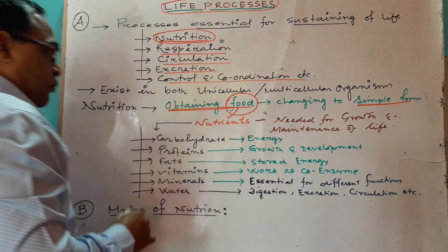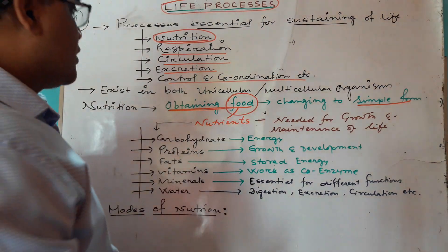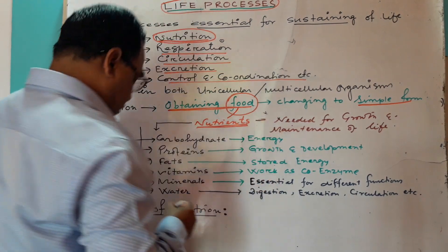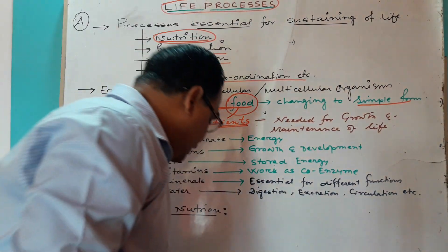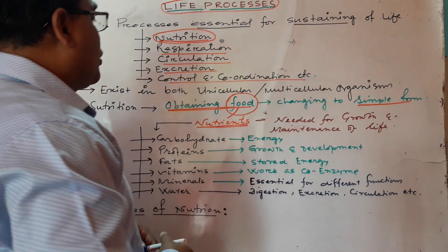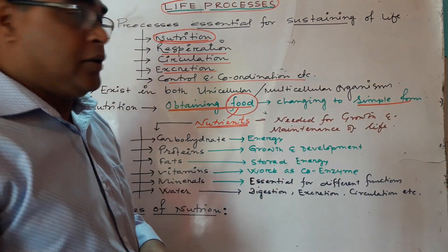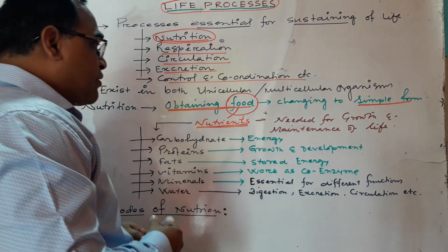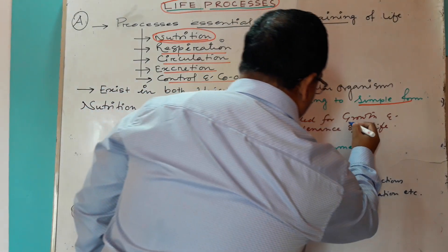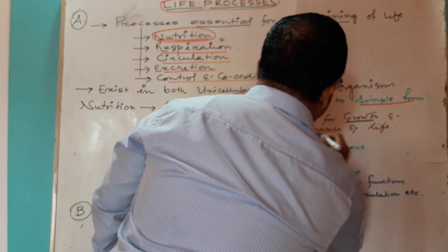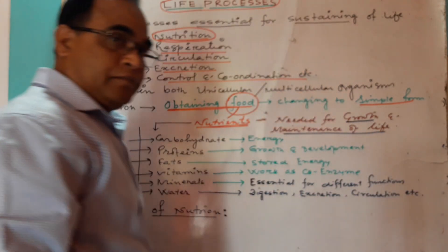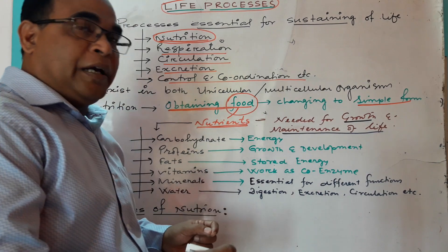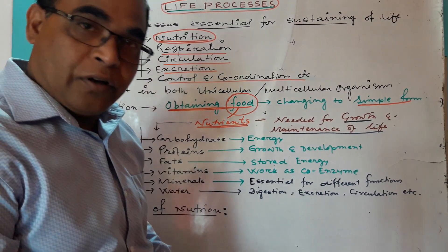So what is food, basically? The food contains nutrients. Different types of nutrients are there in food. What is the importance of nutrients? Nutrients are needed for growth and maintenance of life. These are very important for growth, development, and maintenance of life.